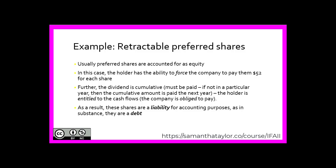Usually, as we've seen in a previous chapter, preferred shares are accounted for as equity. However, in this case, the holder has the ability to force the company to pay them $52 for each share. Further, the dividend is cumulative — that is, it must be paid; if not in a particular year, the cumulative amount is paid the next year. This means the holder is entitled to those cash flows and the company is obliged to pay. As a result, these shares are a liability for accounting purposes, as in substance they are debt.